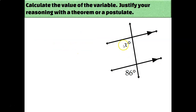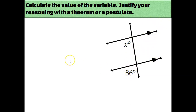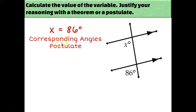On our next diagram, our two labeled angles are both in the bottom left-hand corner out of the four angles created by the intersection of each line — x is in the bottom left-hand corner, and 86 is in the bottom left-hand corner. That makes them corresponding angles. Since the lines are parallel, corresponding angles are equal to each other, so x must be 86 degrees by the corresponding angles postulate.